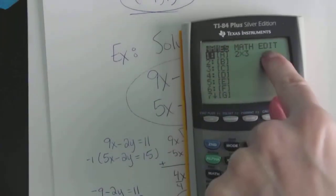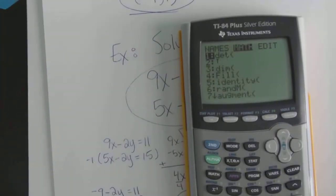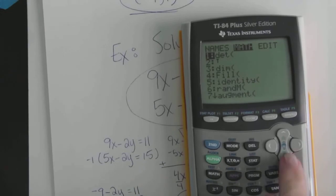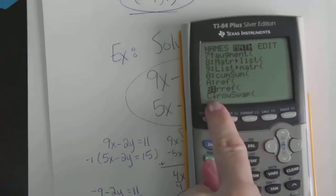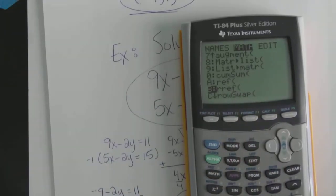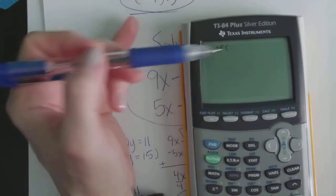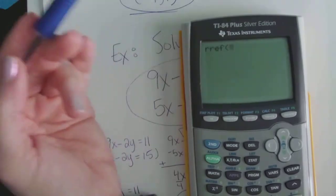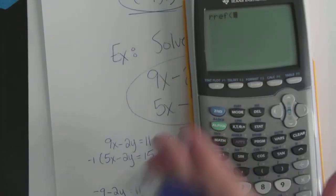Now you want to go back in. So now you go second matrix again from scratch. And now we already did the edit. Now work your way back. Go to math. All the way down to that double R-R-E-F. Enter.